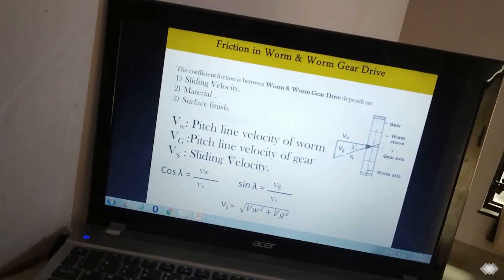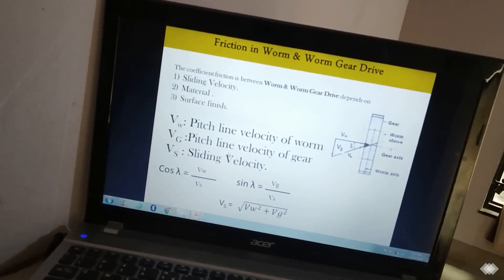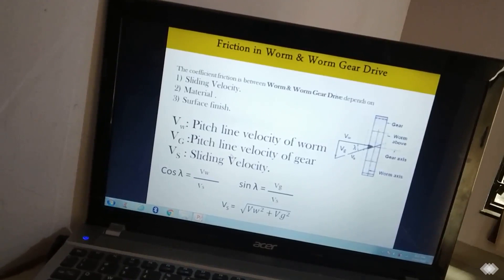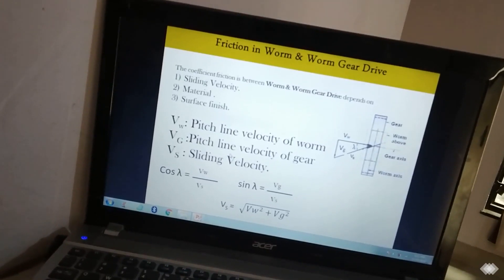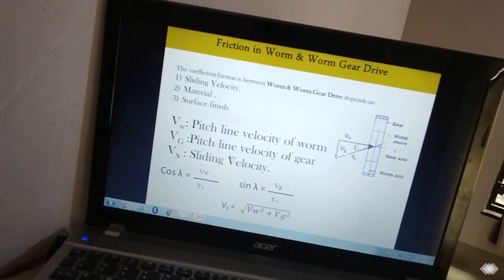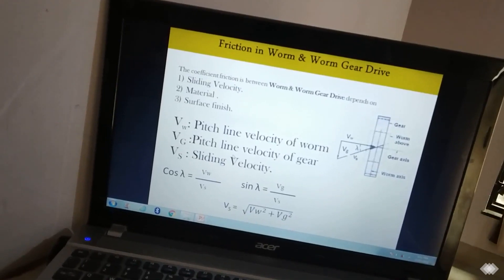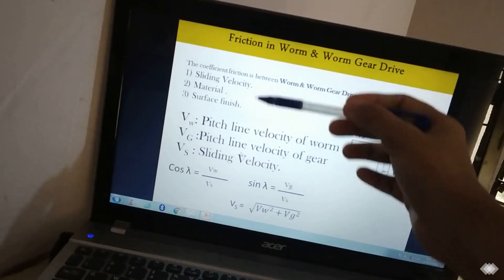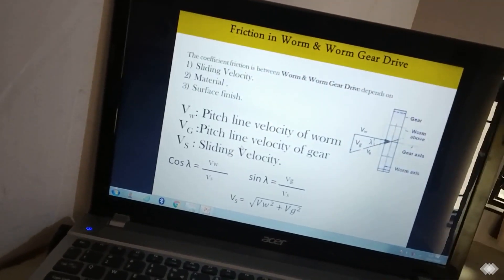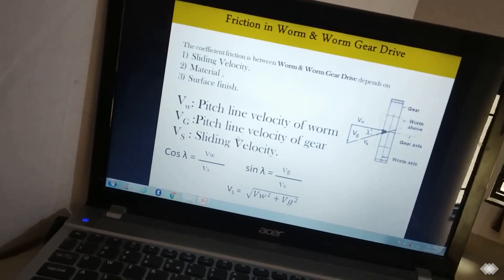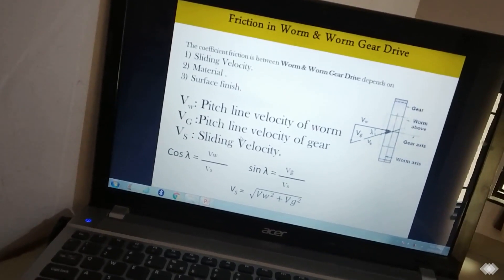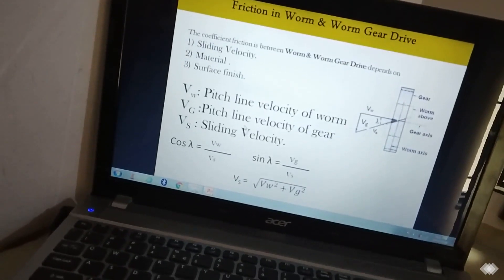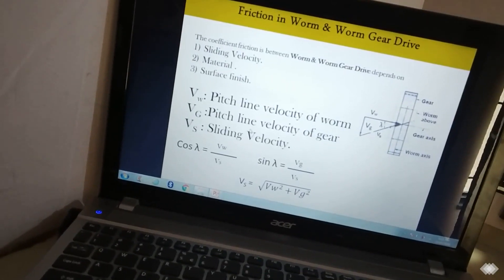Now to find the force component, we need to find the coefficient of friction between the worm and worm gear. The coefficient of friction depends on the sliding velocity or rubbing velocity, the material used in worm and worm gear, and the surface finishing.